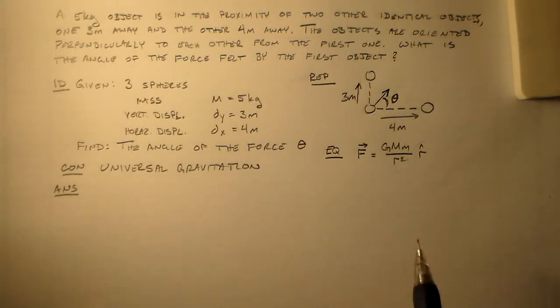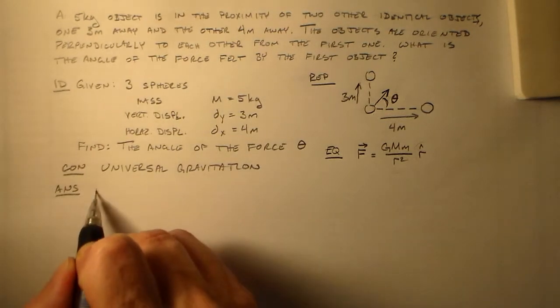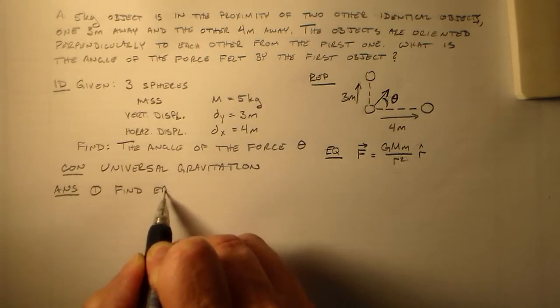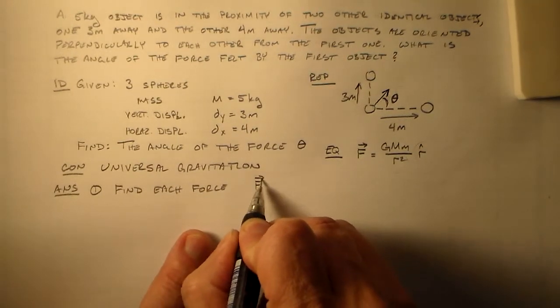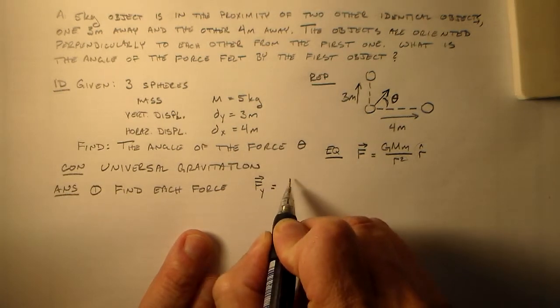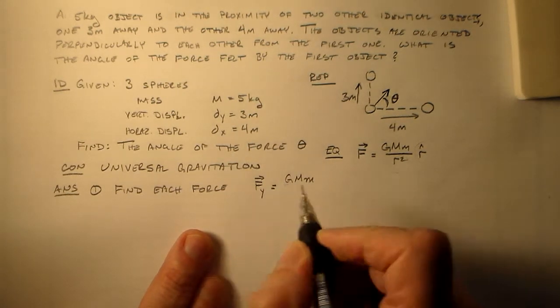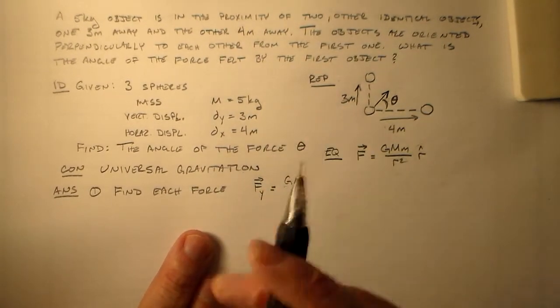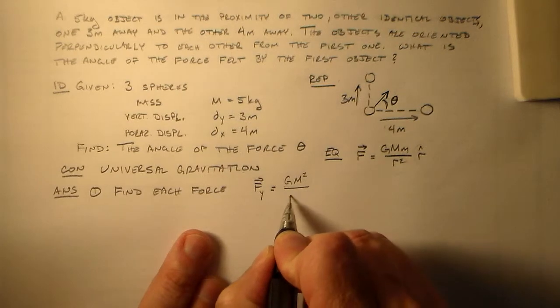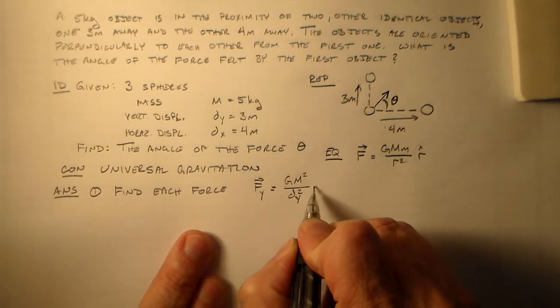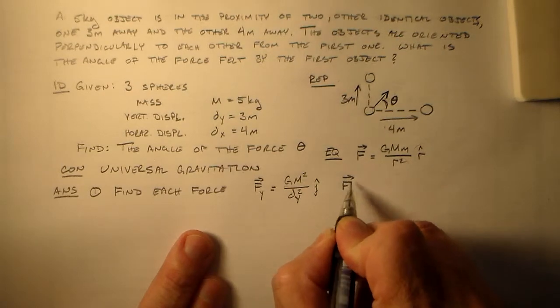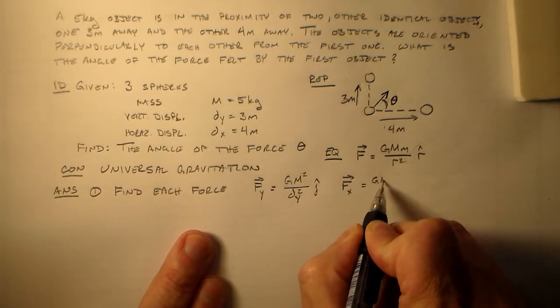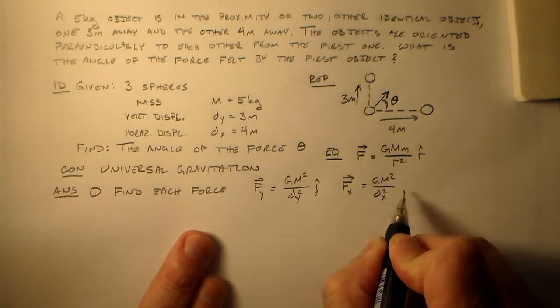So what do I have to do to do this? Well, basically I have two forces. So I have to use superposition with those forces. So I have to find both forces. So my force in the Y direction there is equal to GMM, well, both M's are the same, excellent. So I can just put a square there, and then down here I have DY squared, and that's all in the J direction, it's moving upwards this way. And for the X, we have exactly the same sort of deal, GM squared, DX squared in the I hat direction.